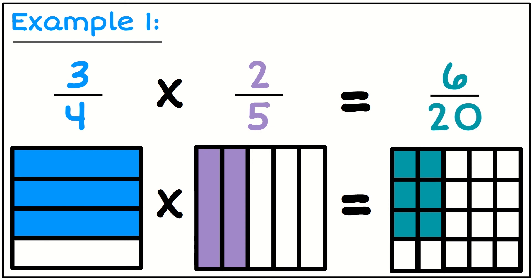That's what my answer is going to be: six out of twenty. Now if I look at what happens to the numbers—if I take the numerators, the numbers on top—three times two is equal to six.